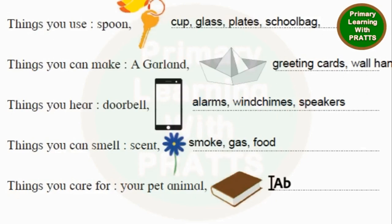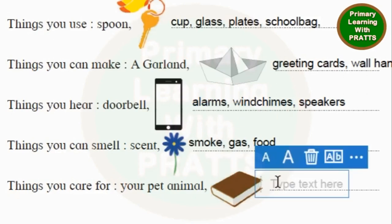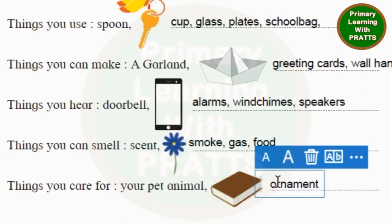Things you care for: your pet animal, Books, Jewelry — or we can write Ornaments, so you don't make a mistake with the spelling of Jewelry. Ornaments. Crockery — crockery is something we have to take great care of.